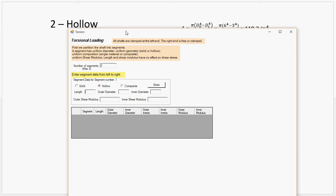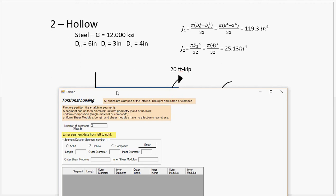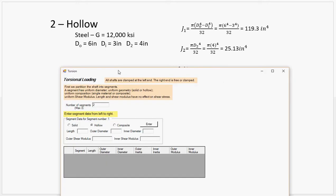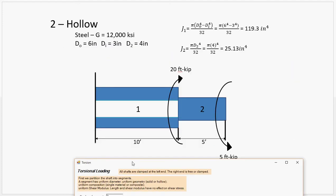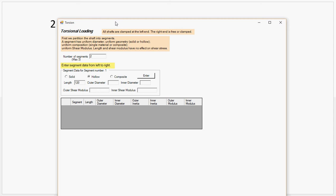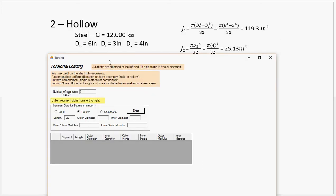Remember, I'm putting things into inches being the base unit. It may be easier to do feet, but I'm just kind of showing that as long as you stay consistent, you can work with changing things up a little bit. So, ten feet, that's 120 inches. Outer diameter, six. Inner diameter, three. Outer shear modulus, twelve.